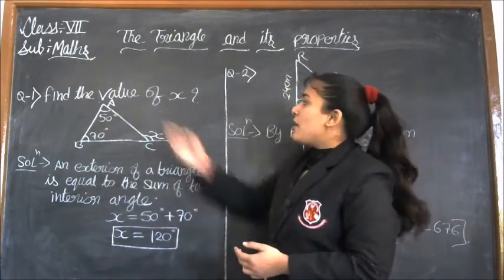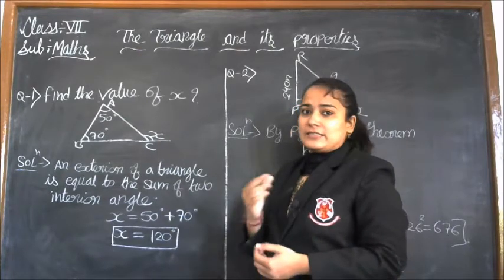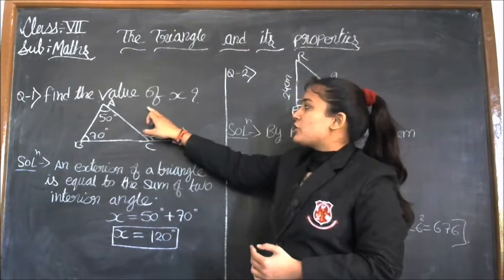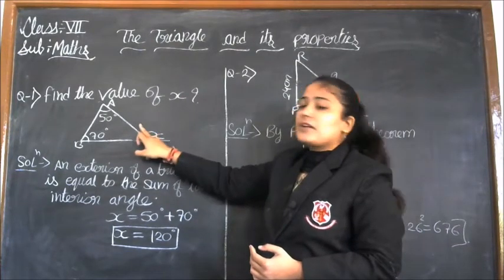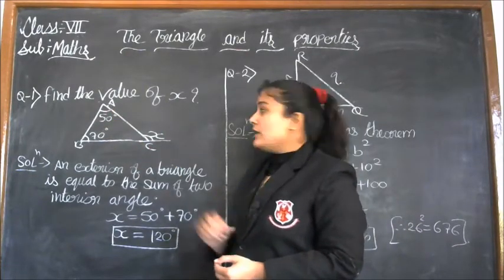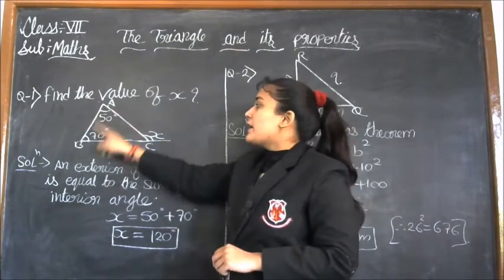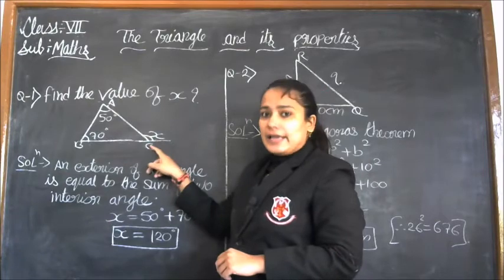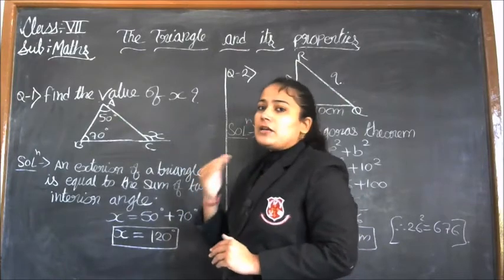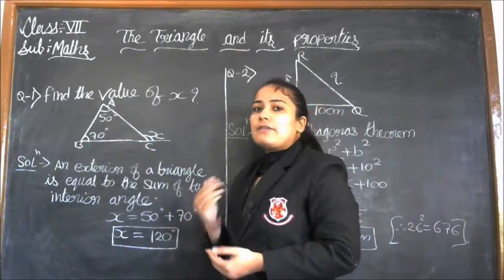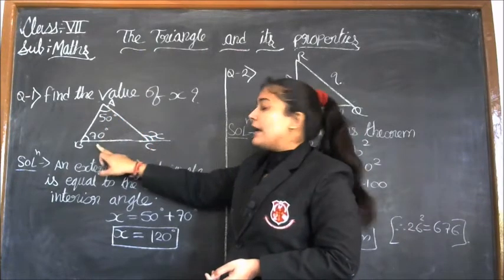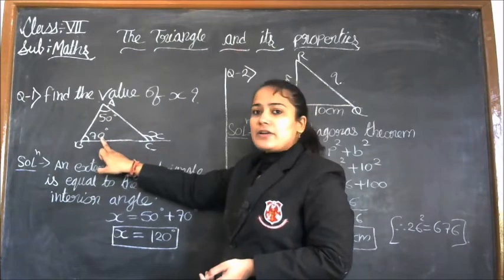The first question is about finding the value of x. The question says: find the value of x. A diagram is given in which triangle ABC has three line segments AB, BC, and AC. Two angles are given: angle A is 50 degrees and angle B is 70 degrees.